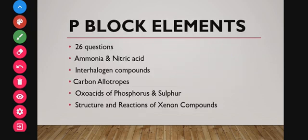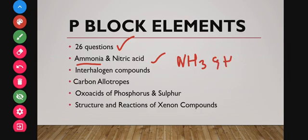The next topic is P block elements, from which 26 questions were asked from the past 10 years. In P block, you have to know the preparation of ammonia by Haber's process and the chemical reactions of ammonia, and then nitric acid — ammonia and nitric acid are very important.